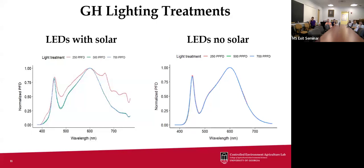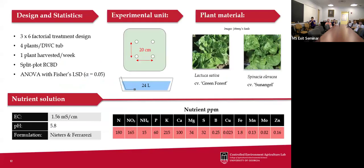The spectral distribution was slightly different in the greenhouse because of sunlight contribution — the low light intensity level had to dim the LEDs more, producing a broader spectral distribution typical of sunlight. With six nutrient management strategies and three light intensity levels, we designed a three-by-six factorial in a split-plot RCBD. Each experimental unit was one deep water culture tray with four plants. We tested two crop types: a lettuce cultivar and a spinach cultivar. All deep water culture trays started with the same starter solution, and pH was maintained at 5.8 throughout the experiment.